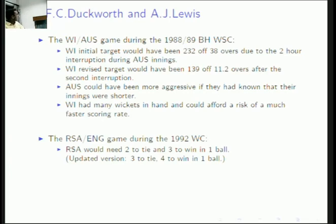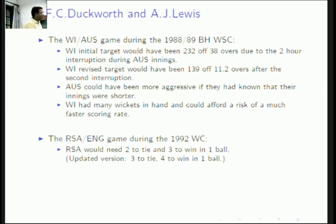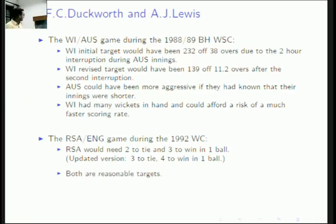There is actually a newer version of the method which says it's not 2 to tie and 3 to win, but 3 to tie and 4 to win. So depending on which version of the Duckworth-Lewis method you use, the outcome would have been different. Both are reasonable targets — you can believe that at least this is something sensible.